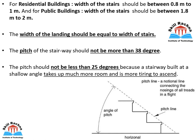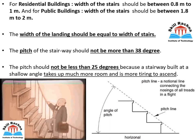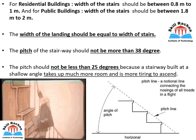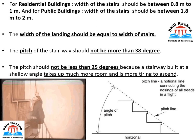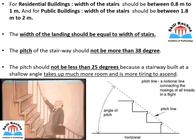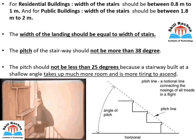For residential buildings, the width of stairs should be between 0.8 to 1 meter; for public buildings, 1.8 to 2 meters. The width of the landing should be equal to the width of the stairs. Now, one of the most important points is the pitch — the angle made by the line connecting all the nosings of the treads with the horizontal surface. The pitch should not be more than 38 degrees, and not less than 25 degrees. Below 25 degrees, the staircase requires too much space and becomes tiring to use.